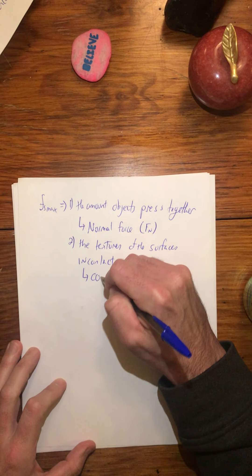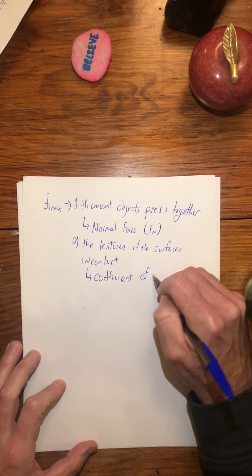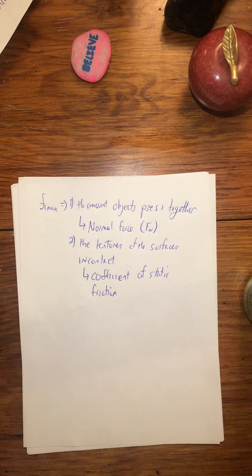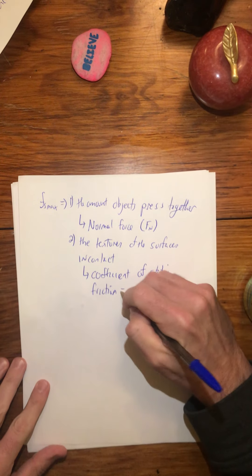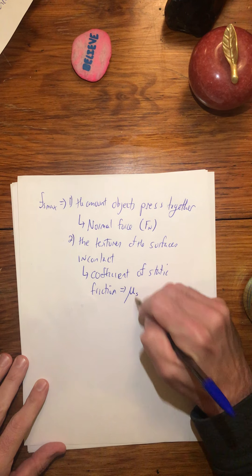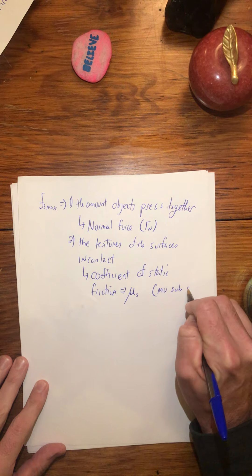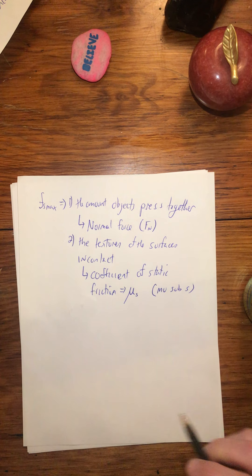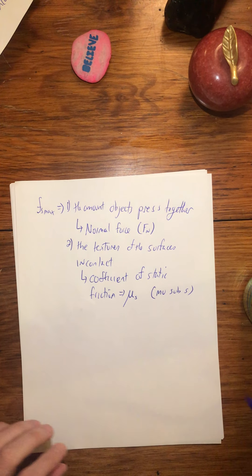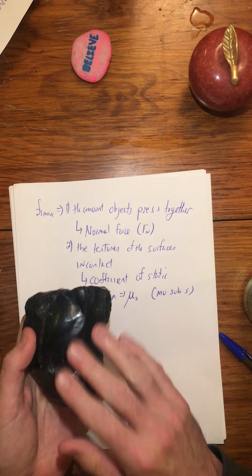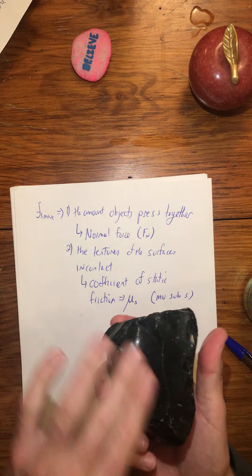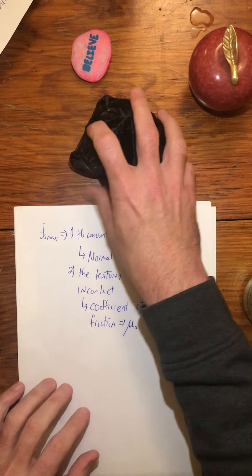I'm going to introduce something called the coefficient of static friction — a number we assign to describe how much friction those textures produce. The symbol is the Greek letter mu with a subscript S, written mu sub S. If you have very rough surfaces in contact, mu would be really high. If you have very smooth surfaces — like this piece of obsidian I got from Iceland — that has a fairly low mu on my kitchen table. Those slide across each other really easily.